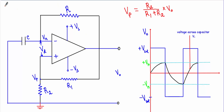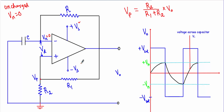Initially the capacitor C is uncharged, meaning the voltage across it, Vn, equals zero volts. The portion of output voltage dropped across R2 is our Vp, and R1 and R2 form a voltage divider network, so Vp equals R2 divided by (R1 plus R2) multiplied by Vo. When supply voltages are applied, a small output offset voltage VOOT appears at the output, so a small portion of voltage appears at the non-inverting terminal, making Vp equal to VOOT.